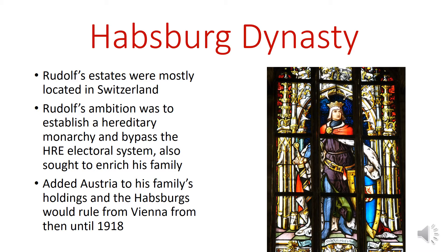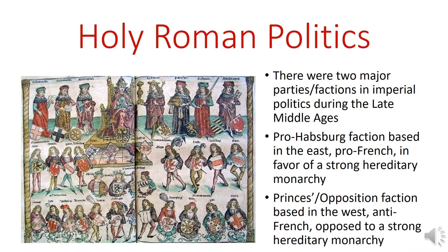Surprisingly, even though he was coming from a relatively weak position vis-à-vis most of the electors in his realm, he was able to do this, and the Habsburgs would win the election for Holy Roman Emperor for a few centuries in a row. The main power base that Rudolf would acquire, which would become synonymous with the Habsburgs, would be Austria — and particularly Vienna. The Habsburg dynasty at Vienna would remain in place all the way from when Rudolf established his seat there in the 13th century until the fall of the Austro-Hungarian Empire in 1918 following World War I.